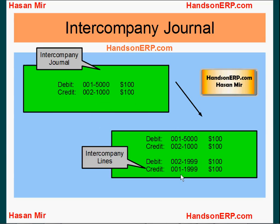The first segment here we are assuming is a company segment, and let's assume we have only two segments: company and natural account. These two lines will automatically be added by the system based on your setup, and then this journal would be posted. Now this journal is balanced by each company as well. You can see intercompany accounts have been used, and you can define that in the setup — which account to use for which combination of companies. Here we are assuming one account, so we are debiting company one and debiting company two by the same account and same amount as in the first two lines.